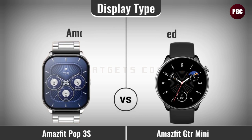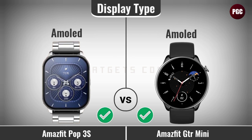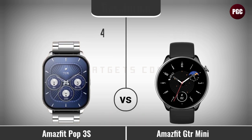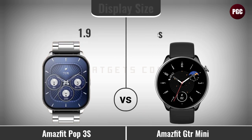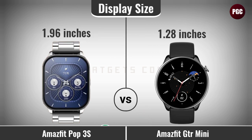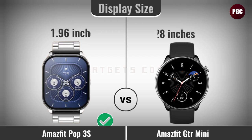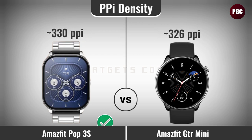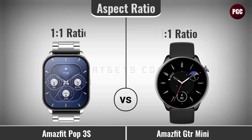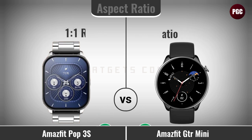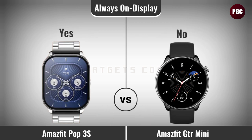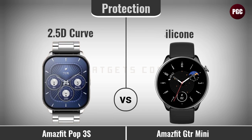Now for display comparison: display type, display resolution, display size, PPI density, aspect ratio, always-on display, and screen protection.